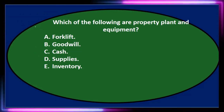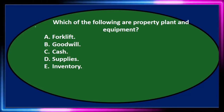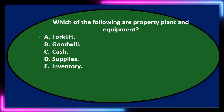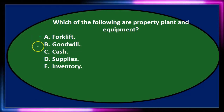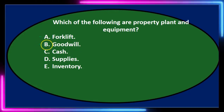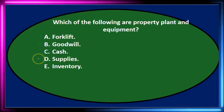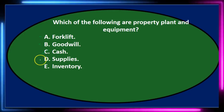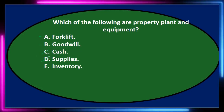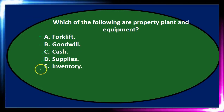We're going to read the question and then see if we can eliminate and narrow down our choices. A forklift, typically, depending on whether we're going to resell it — which would be inventory — or not, would be in property, plant, and equipment as a longer-term asset. Goodwill — not sure exactly what that is, so we'll come back to that one. Cash is a current asset, so we're not talking about a current asset. Supplies is also a current asset. Inventory is also part of current assets and not property, plant, and equipment. We're left with A and B.